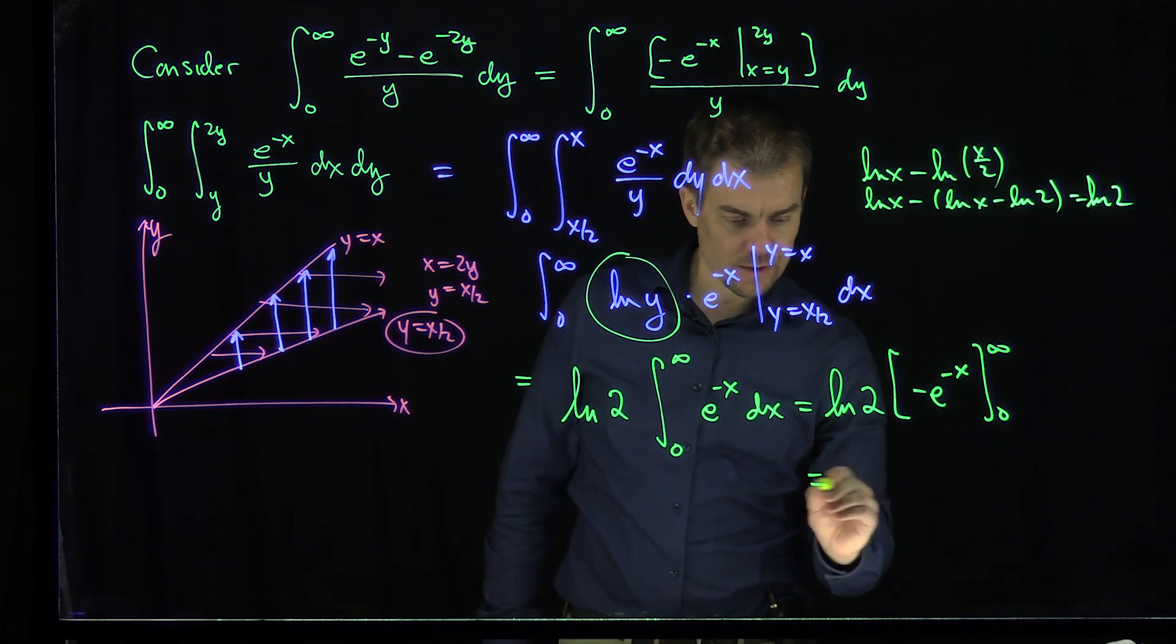So the final answer is just ln(2). This improper integral converges to ln(2) by considering it as a double integral. Thank you very much.